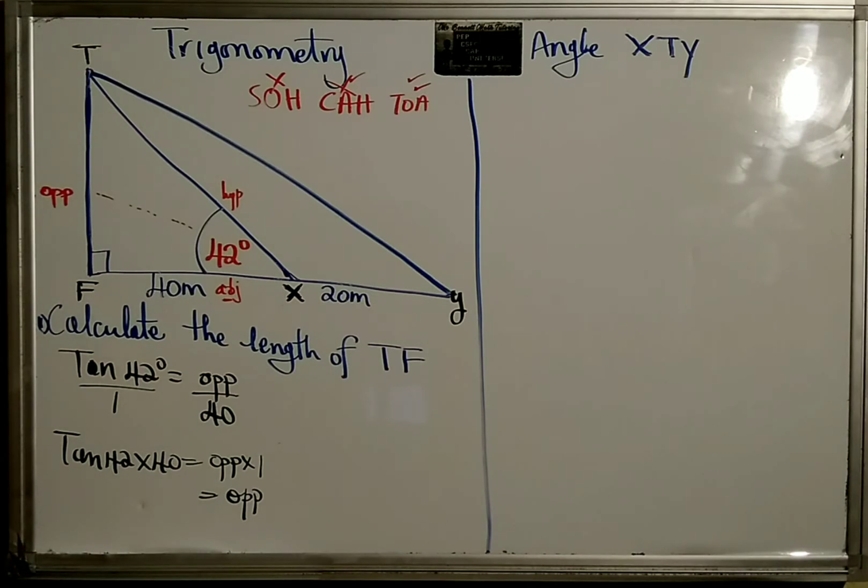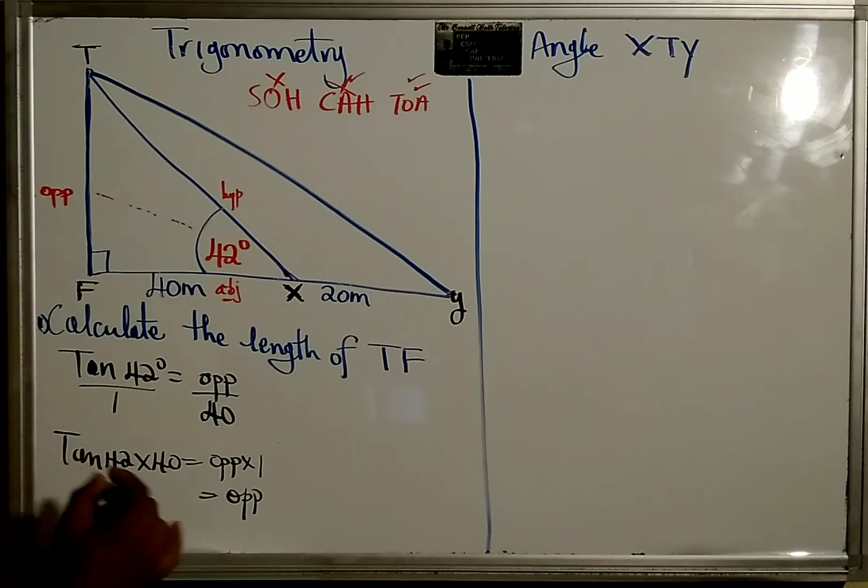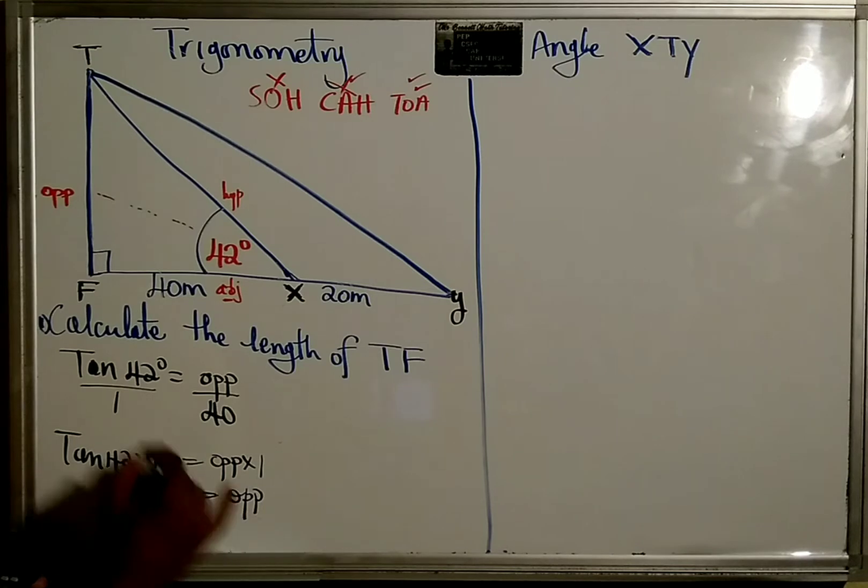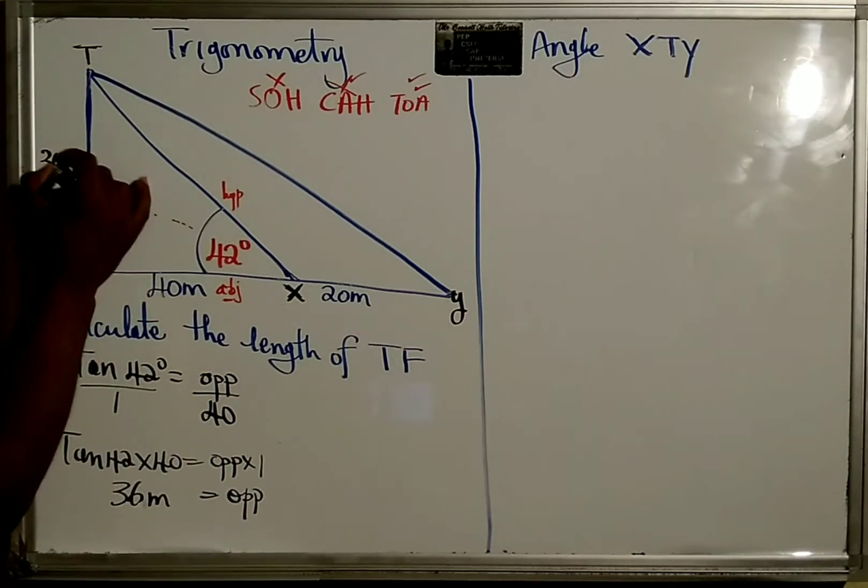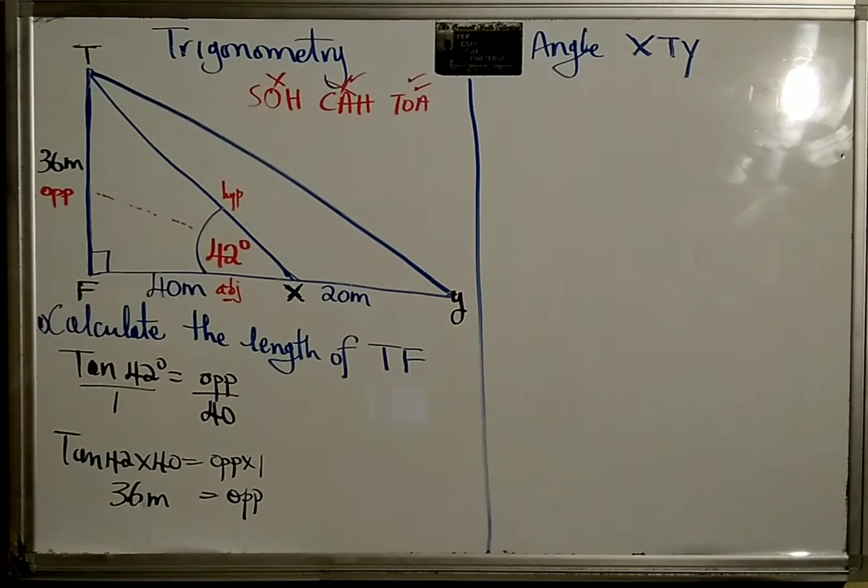Let's press tan 42 times 40 and boom, 36. So it's 36 meters - the length of this is 36 meters. Now they ask us to find the angle.